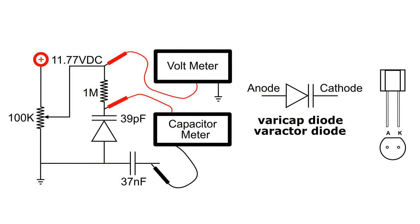As we saw in the video, with zero volts applied to the cathode or across the varactor diode, the capacitance meter read 877 picofarads.